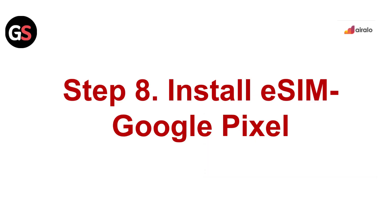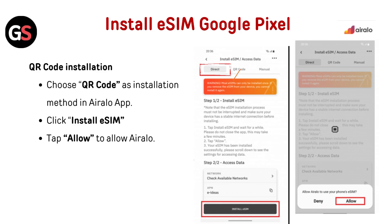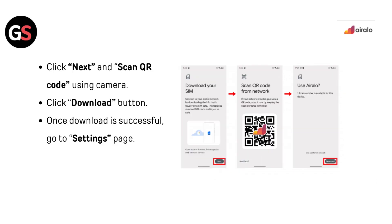Step 8 — Install eSIM on Google Pixel via QR code: Choose QR code as the installation method in the AirLo app and click Install SIM. Tap Allow to allow AirLo. Then go to Settings, click Network and Internet, click the plus icon next to SIMs, click Download eSIM instead, click Next and scan the QR code using your camera, then click Download.